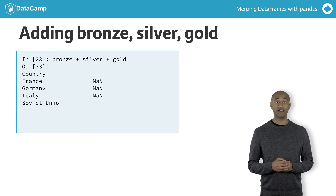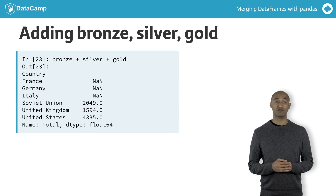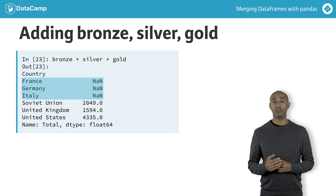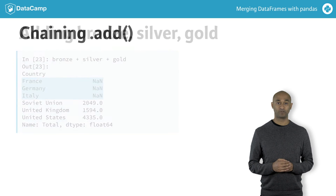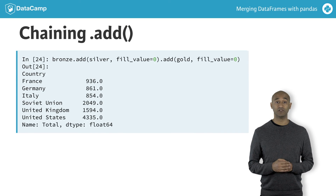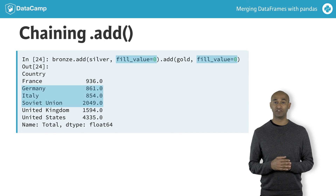Adding all three series together yields six rows of output, but only three have non-null values. France, Germany, and Italy are not index labels in all three series, so each of those rows is NaN in the sum. We can also chain multiple method calls to the dot add method with fill_value equals zero to get rid of those null values in the triple sum.